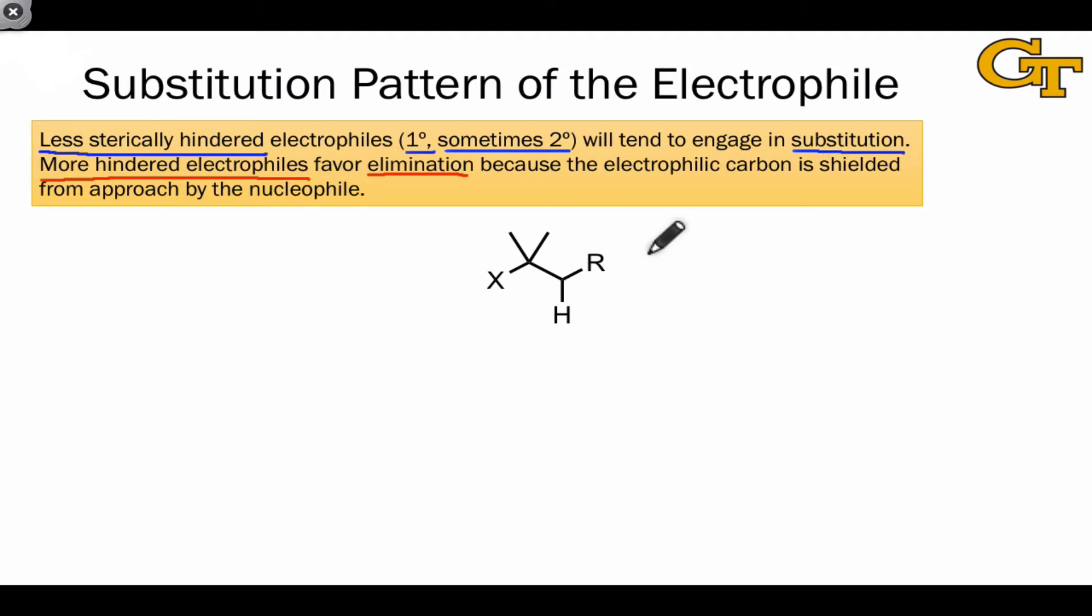For the time being though, let's constrain ourselves to something that could act as a strong base or a strong nucleophile, something like OR-. What dictates whether substitution or elimination will dominate is steric hindrance in the electrophile in this case. And the question is, how hindered is this electrophilic carbon as compared to one of the beta hydrogens?